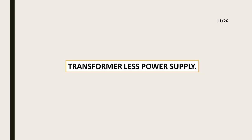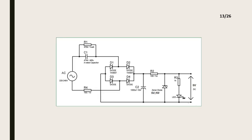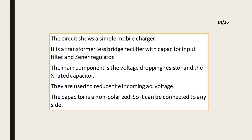Transformer-less power supply. The transformer is bulky and occupies more space. The transformer-less power supply is compact and requires small space. The mobile charger is a transformer-less rectifier with regulator circuit. The figure shows the circuit diagram of the transformer-less power supply. The circuit shows a simple mobile charger. It is a transformer-less bridge rectifier with capacitor input filter and zener regulator.